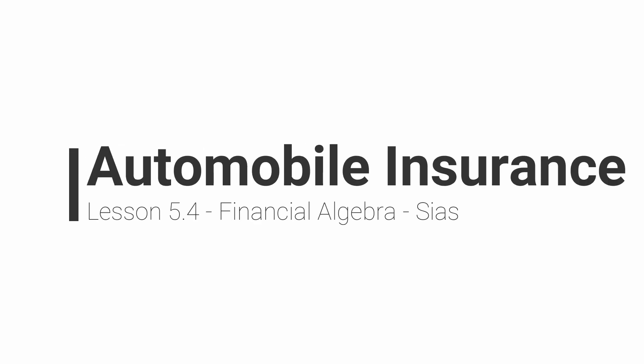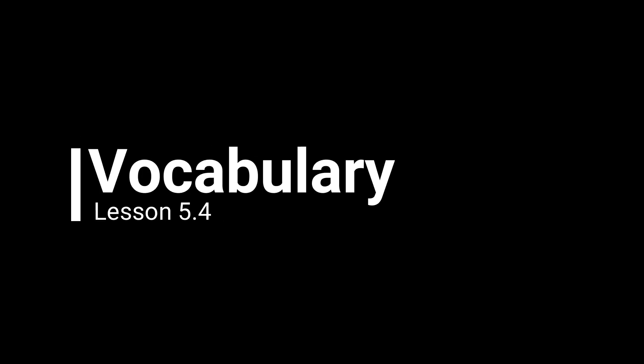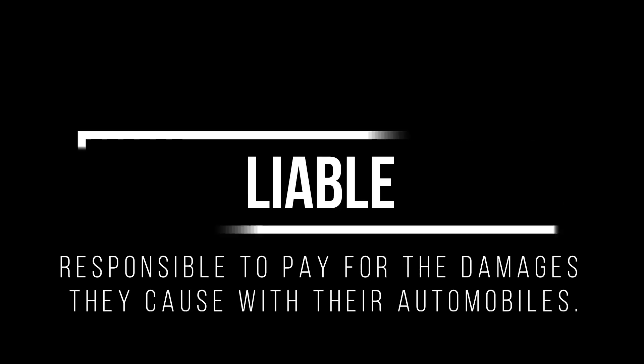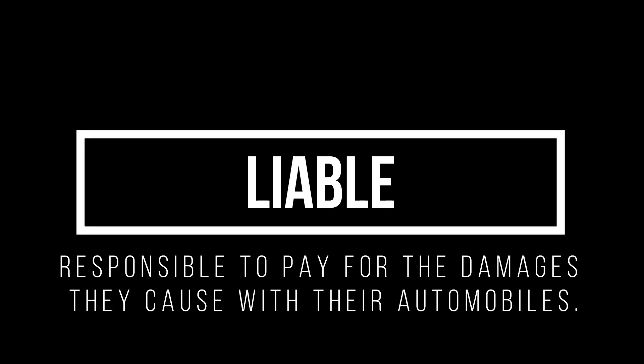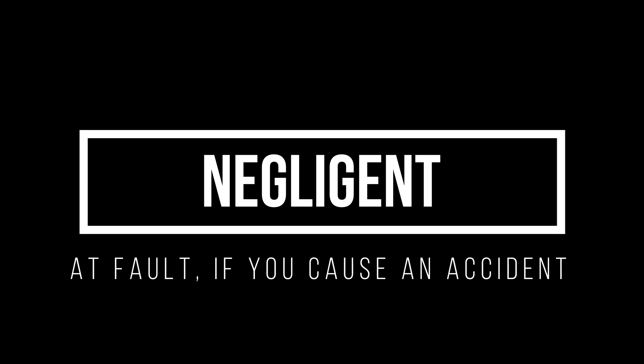Alright guys, lesson 5.4: automobile insurance. Let's get on with the vocabulary section. First word we have is 'liable' - this is when you're responsible to pay for damages caused by a particular automobile accident. Next word is 'negligent' - this means when you are at fault.